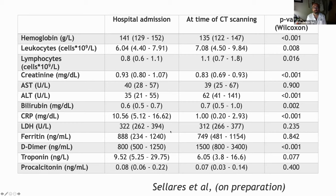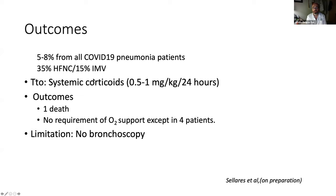It's interesting to compare the biological parameters from hospital admission to the time of CT scanning. Although C-reactive protein was high at hospital admission, it decreased at the time of scanning, but ferritin remained persistently high. D-dimer also increased during this period. Procalcitonin was low, so we didn't see too many bacterial or other pathogen co-infections. This phenotype occurs in five to eight percent of all COVID pneumonia patients. Not all were in the ICU — only 35% required high-flow oxygen and 15% required invasive mechanical ventilation.